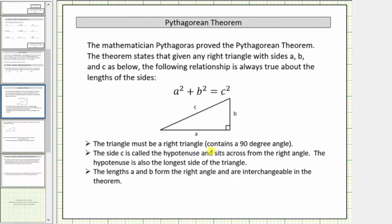The triangle must be a right triangle, which means it contains a ninety-degree angle. The side c is called the hypotenuse and sits across from the right angle. The hypotenuse is also the longest side of the triangle. It's important that we identify the hypotenuse correctly because, looking at the equation, notice how it's on one side of the equation by itself.